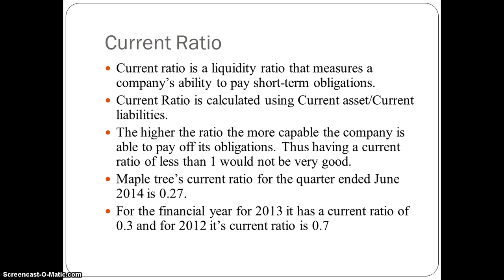Having a Current Ratio of less than 1 will not be very good. In Maple Tree's case, it has a Current Ratio for the quarter of June 2014 of 0.27. For the financial year of 2013, it has a Current Ratio of 0.3, and for 2012, it has a Current Ratio of 0.7. There is a sharp drop of 0.4 between these years.